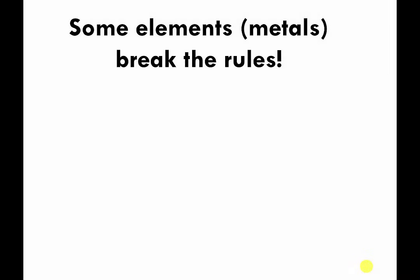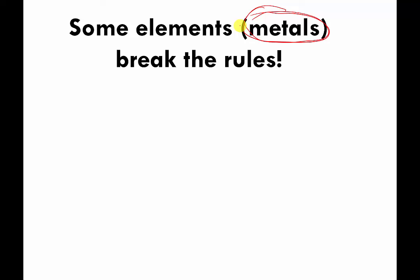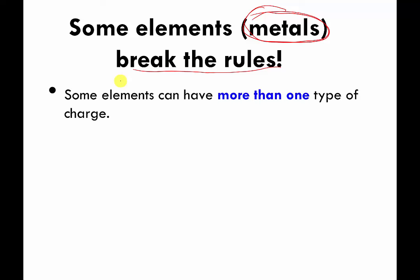For the past couple of videos I've been telling you that a lot of atoms, especially in the first three rows of the periodic table, have a preferred electrical charge. Lithium likes to be plus one, oxygen likes to be negative two, helium likes to have no charge. I gave you some rules about the edges of the periodic table, but I said the middle of the periodic table the rules kind of break apart, because there are a bunch of metals there, and many metals can actually have more than one type of electrical charge depending on the environment they're in.